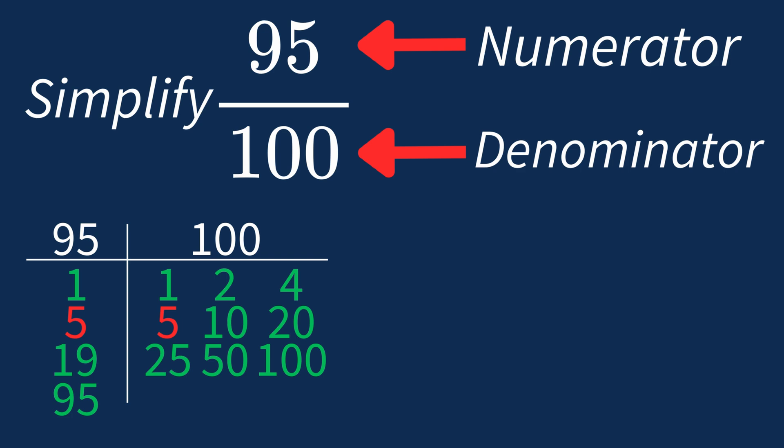This means we can divide both the numerator and denominator by 5 to simplify the fraction.